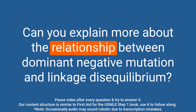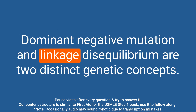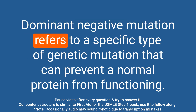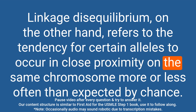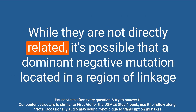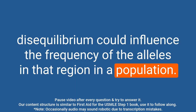Question: Can you explain more about the relationship between dominant negative mutation and linkage disequilibrium? Answer: Dominant negative mutation and linkage disequilibrium are two distinct genetic concepts. Dominant negative mutation refers to a specific type of genetic mutation that can prevent a normal protein from functioning. Linkage disequilibrium, on the other hand, refers to the tendency for certain alleles to occur in close proximity on the same chromosome more or less often than expected by chance. While not directly related, it's possible that a dominant negative mutation located in a region of linkage disequilibrium could influence the frequency of alleles in that region in a population.